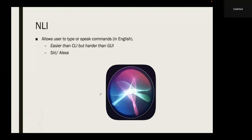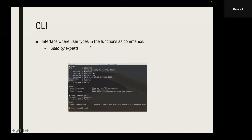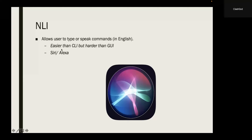The last is NLI, which is natural language interface. It allows users to type or speak commands — not in code or functions like CLI, but in plain English. The NLI translates your command into code. An example is Siri: you can just tell Siri to open an app and Siri will open it. Siri and Alexa are all types of NLI. It is easier than command line interface but harder than graphical user interface. Alright, that's it for this video. Hope you learned something, and I'll see you next time.